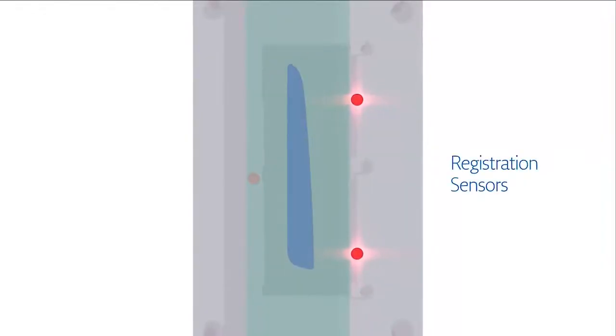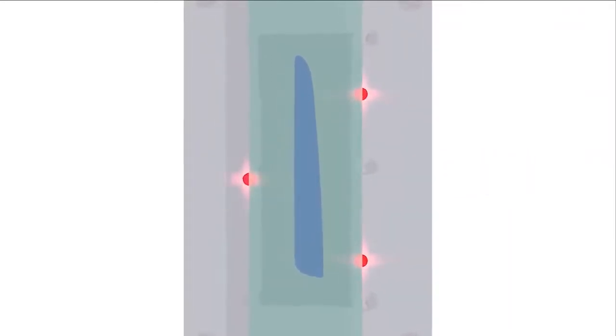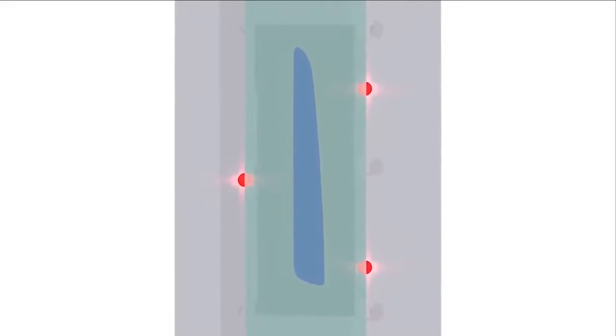Sensors built into the mold read printed registration marks around each image. This ensures accurate alignment of the film against the plastic part and is achieved in mere seconds.